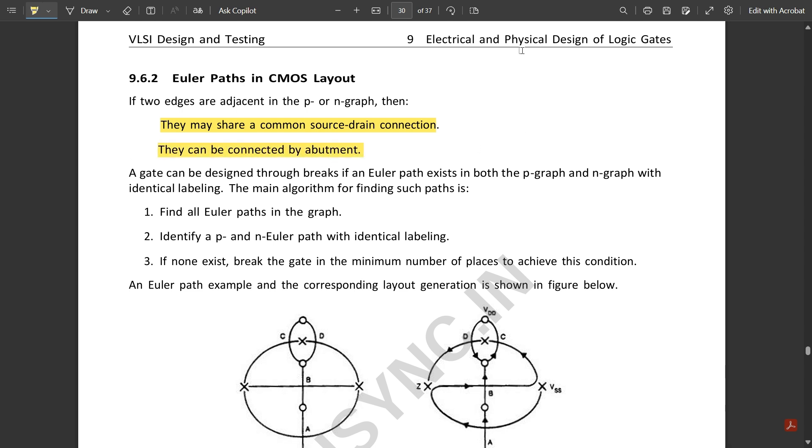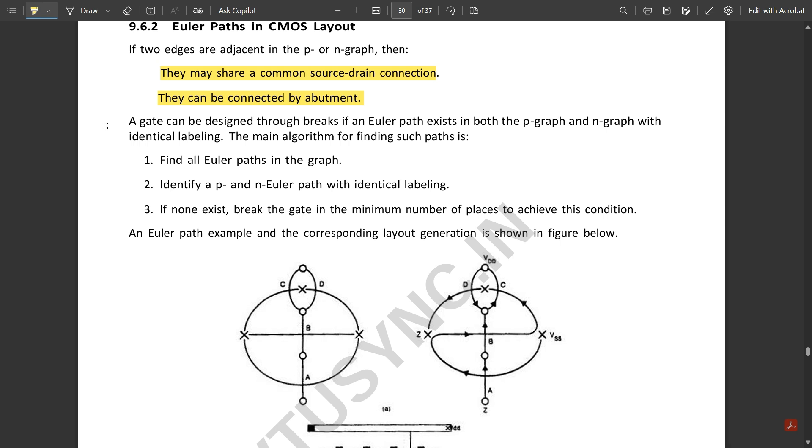A gate can be designed through breaks. If an Euler path exists in both the P graph and N graph with identical labels, the main algorithm for finding such paths is: find all Euler paths in the graph, identify P and N Euler paths with identical labeling. If none exist, break the gate in the minimum number of places to achieve this condition.